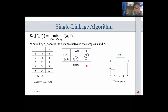This is the dendrogram. The height of the dendrogram shows the level of similarity between two joined clusters. Clusters 1 and 2 are joined at distance 4.0; clusters 4 and 5 are joined at distance 8.0; clusters 1, 2, and 3 are joined at distance 8.1; and all five clusters are joined at distance 9.8.